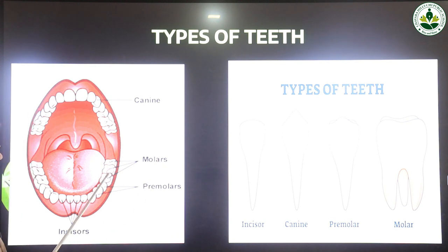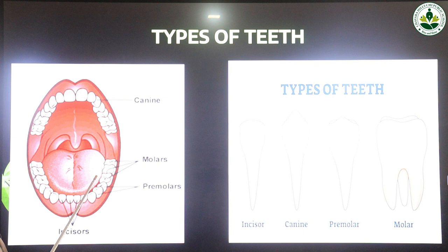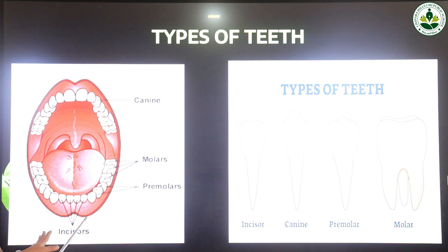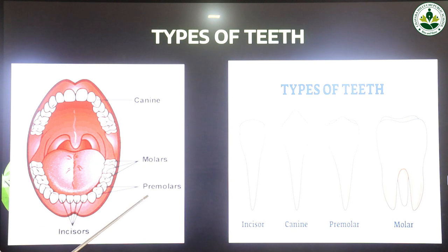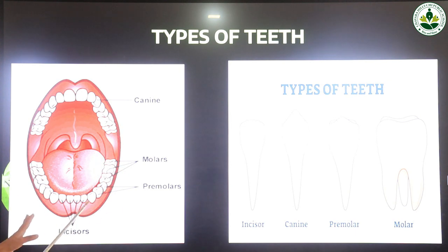Molars are flat, wider, and bigger than premolars. The function of incisors is to cut or bite food; canines are used to tear food; premolars are used to crack and chew food; and molars grind food into fine particles. These are the different functions of the four types of teeth.